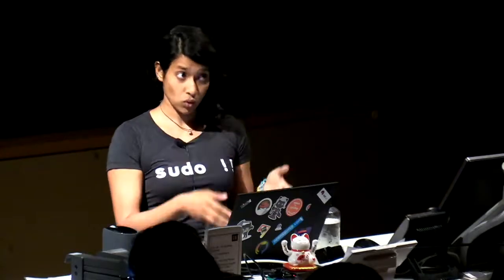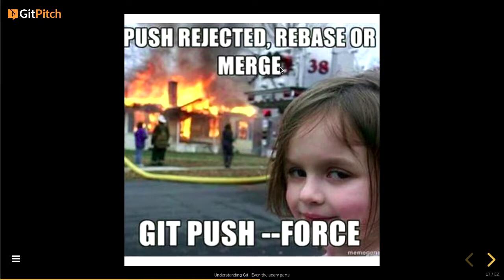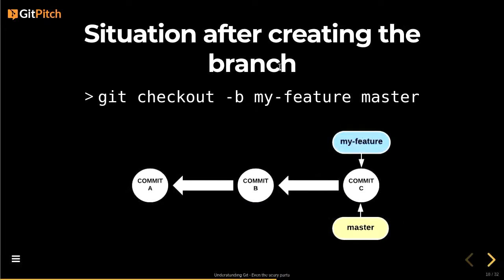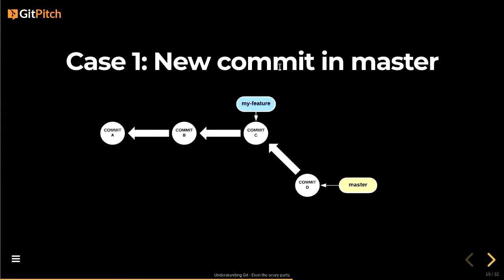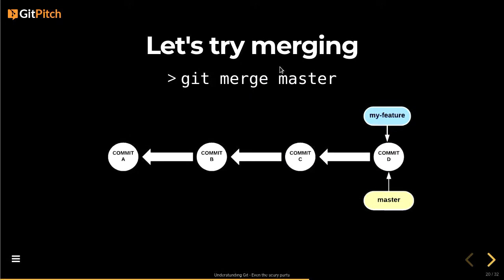Armed with this knowledge of Git storage and branches, let's look at rebasing and merging — how they're similar, different, and what to do. One warning upfront: do not push force. In the simple situation where your feature branch points at the same commit as master and another developer pushes a new commit to master, merging is easy — it just moves the pointer to the latest commit. That's called a fast-forward merge.